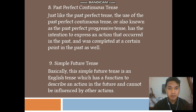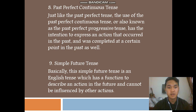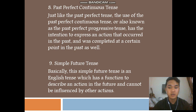Number eight: past perfect continuous tense. Just like the past perfect tense, the past perfect continuous tense — also known as the past perfect progressive tense — is used to express an action that occurred in the past and was complete at a certain point in the past as well. Number nine: simple future tense. This tense has a function to describe an action in the future that cannot be influenced by other actions.